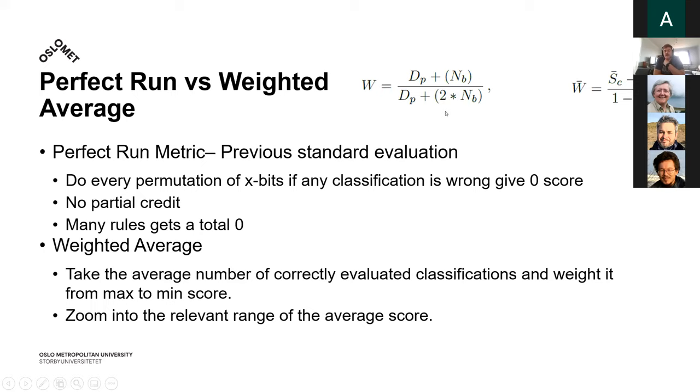So I have two ways to measure the performance. The first one being the very conventional way that has been done in previous studies, where you just consider the perfect run, meaning that every single classification and every single permutation of your X bit has to be correctly classified, which is about 6,000 cases. If a single one of those is wrong, you get zero credit. If everything's correct, you get a one. This didn't really allow us to compare all the rules and doesn't give any partial credit. So we tried to invent a different method. We just did the average classifications. But considering that there is a large set of the classifications that are exactly the same class, about 97% roughly, we decided to weight it from the max to the min in order to better view the difference. So we essentially zoom into the relevant bit of the score.